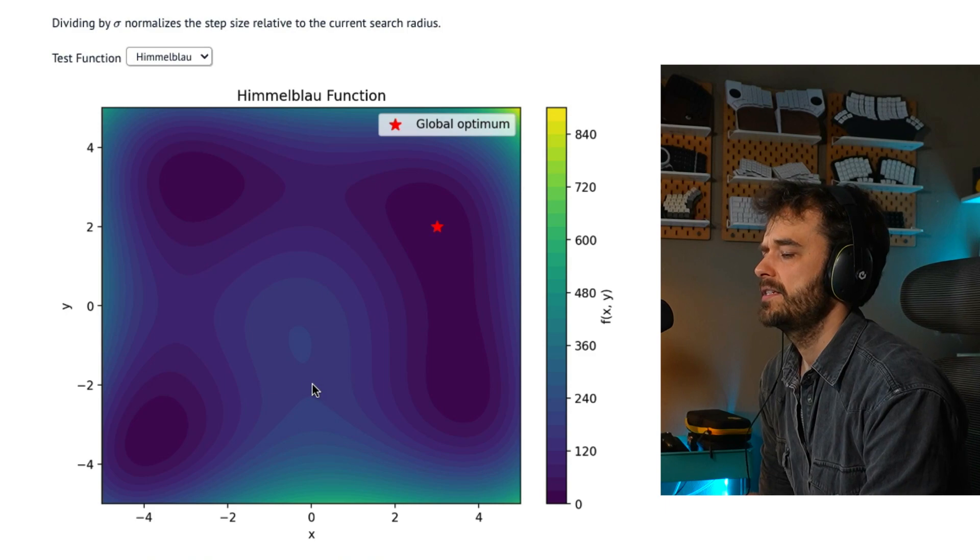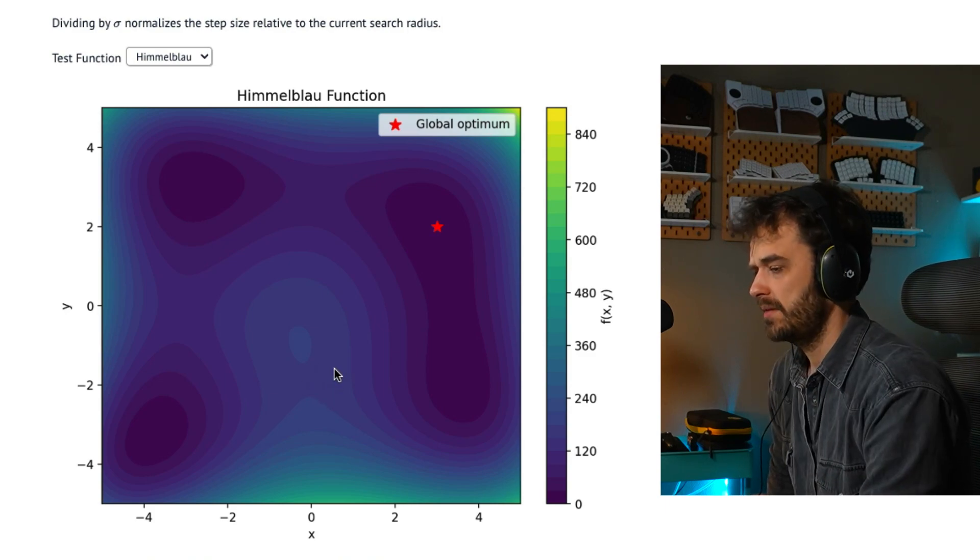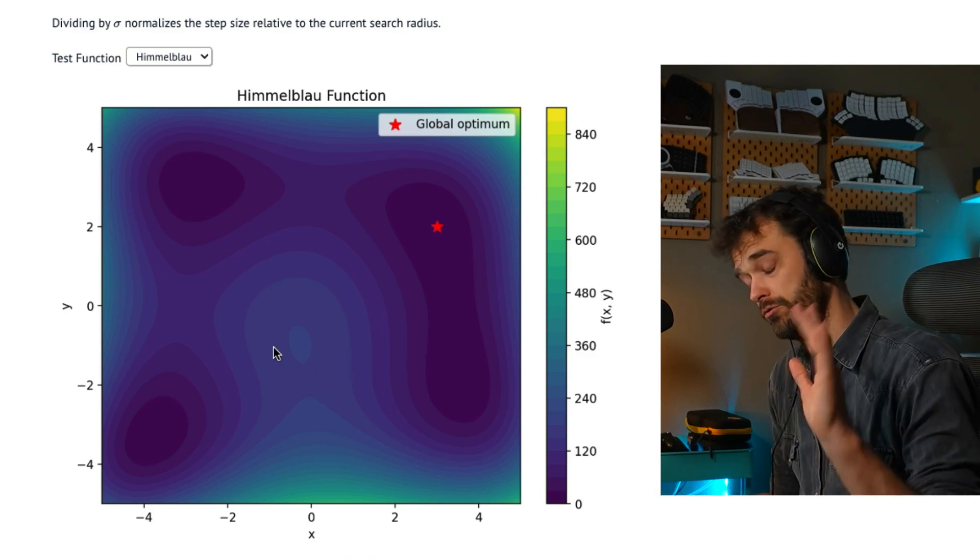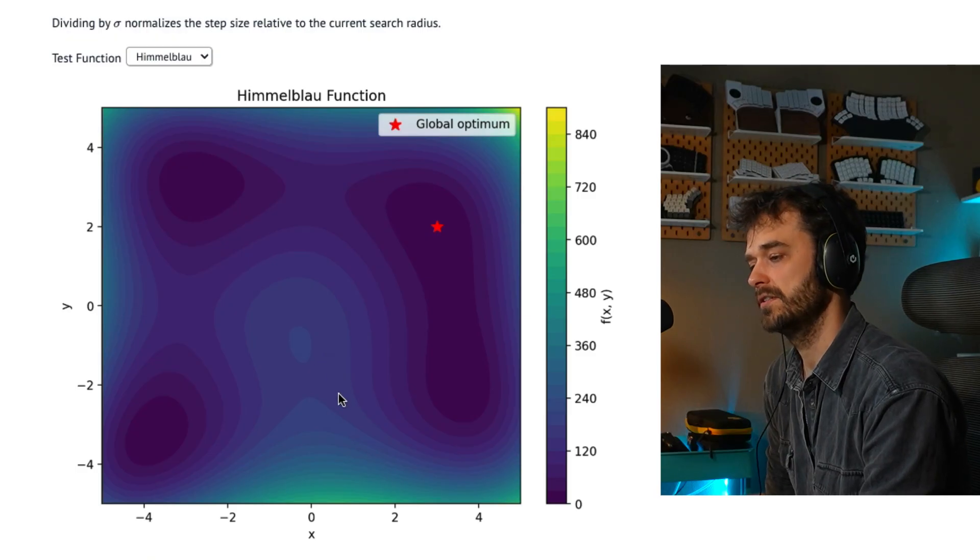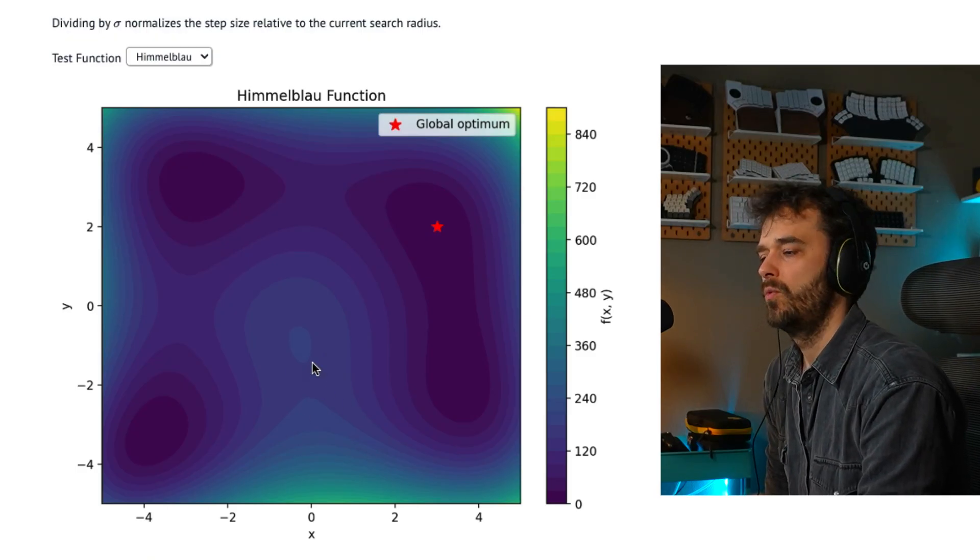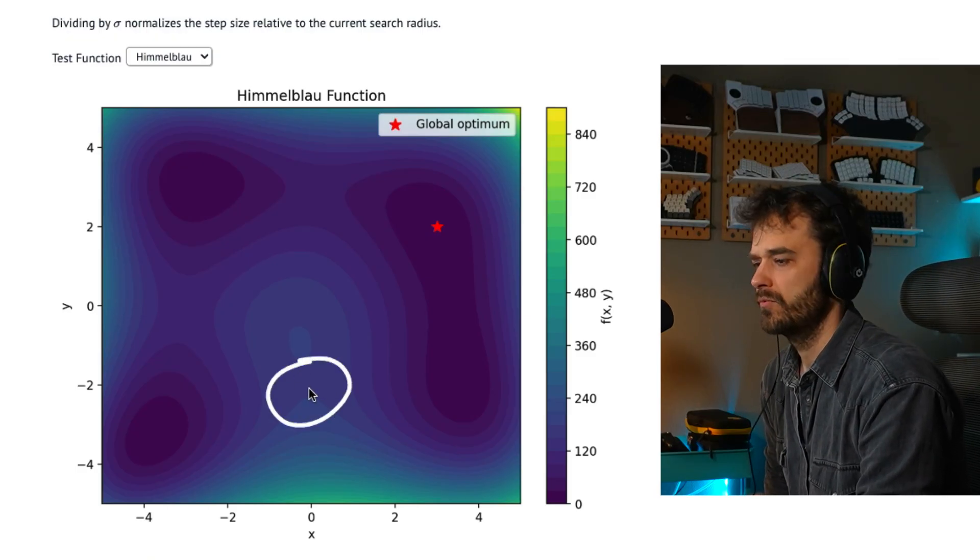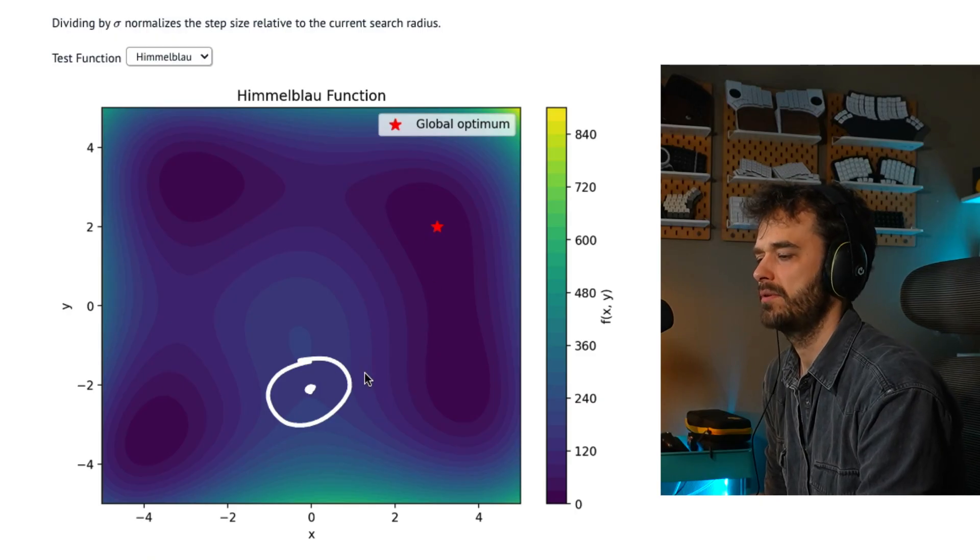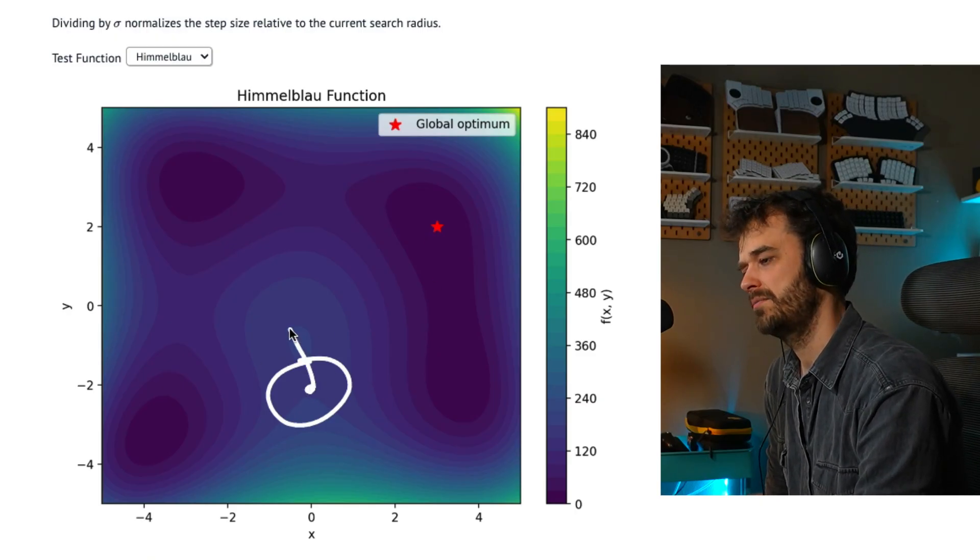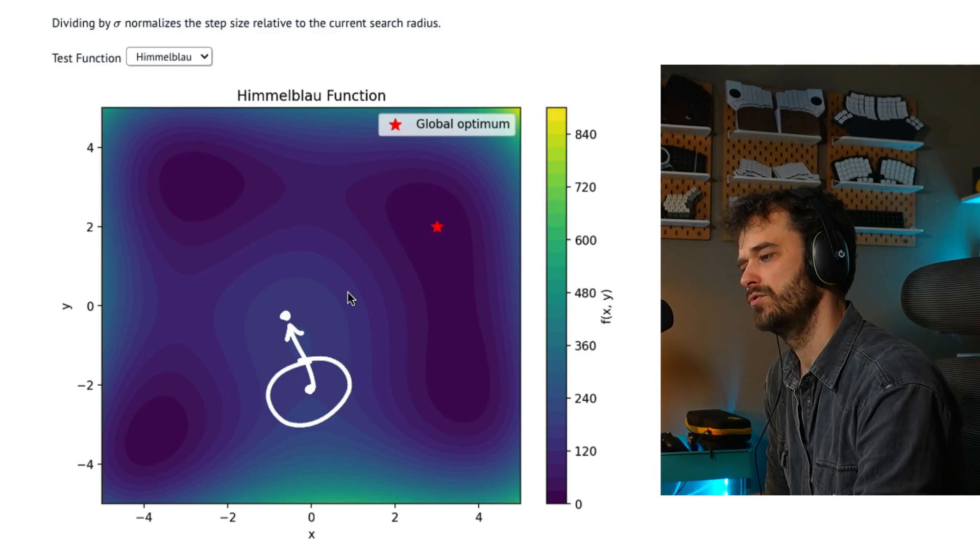The whole point of evolutionary strategies is that you're definitely going to sample. It's a sampling-based approach, which is cool because it also means you can do things with non-differentiable functions. But the thing that's interesting here is that we are going to sample. So this is the mean, we're going to sample a bunch. And after sampling, we are going to update such that we define a new mean to move to.